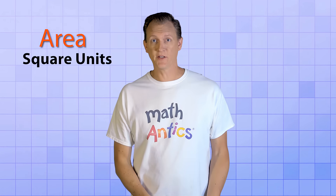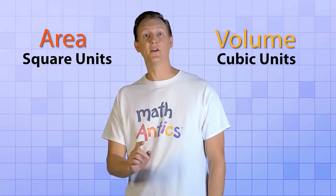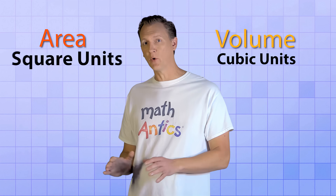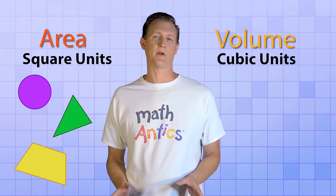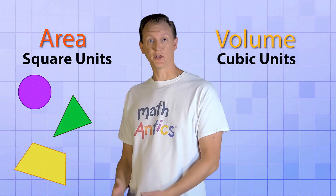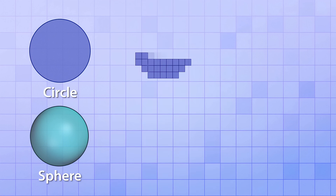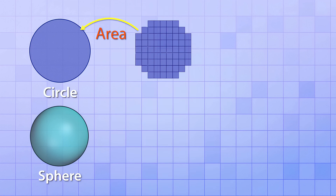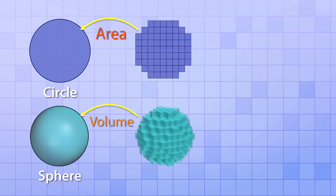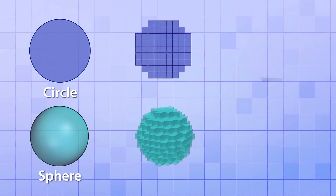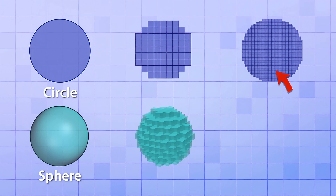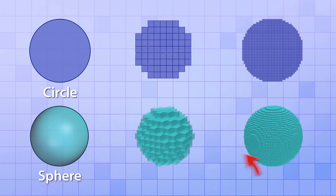Area and square units are related to volume and cubic units, and there's another similarity too. Just like you can use square units to measure the area of any 2D shape, not just squares, you can use cubic units to measure the volume of any 3D shape, not just cubes. For example, just like you can use a bunch of small squares to approximate the area of a circle, you can use a bunch of small cubes to approximate the volume of a sphere. And the smaller the cubes you use, the closer their combined volume will match the volume of the sphere.